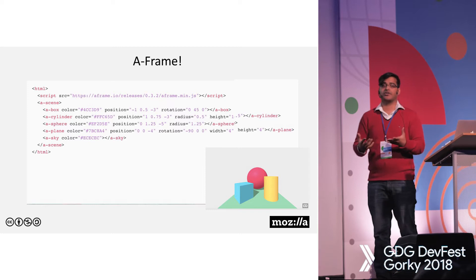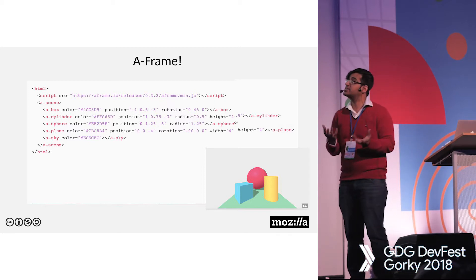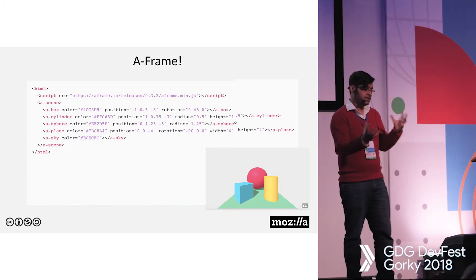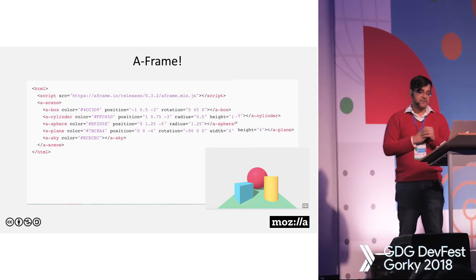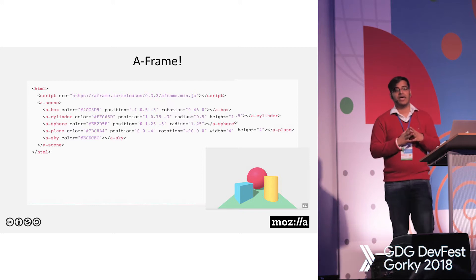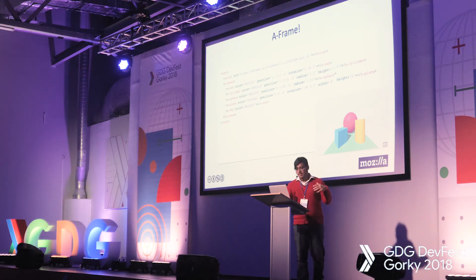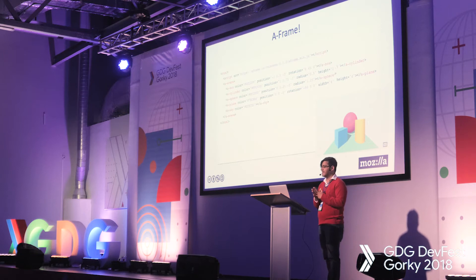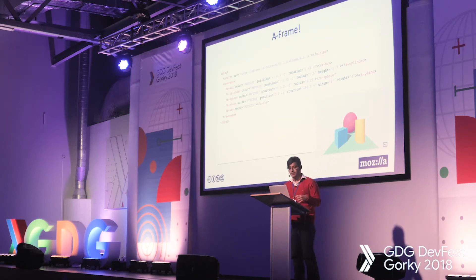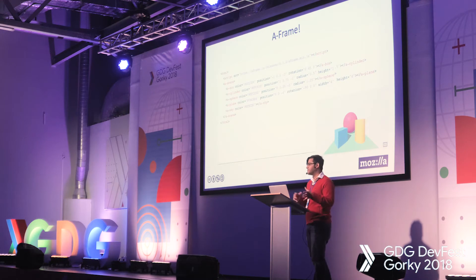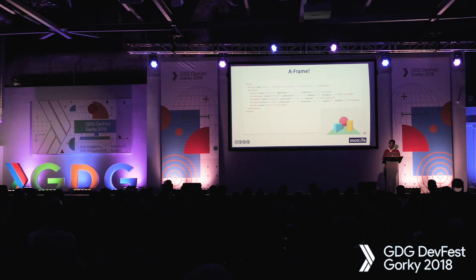A-Frame is an entity component framework — have any of you used Unity? Entity component system is very popular in game development and is used by software like Unity. All the objects in the scene are entities that are inherently empty objects. You plug in components to attach behavior, appearance, or functionality to these objects. Hence, the entity component framework provides an easy way to build up different kinds of objects.